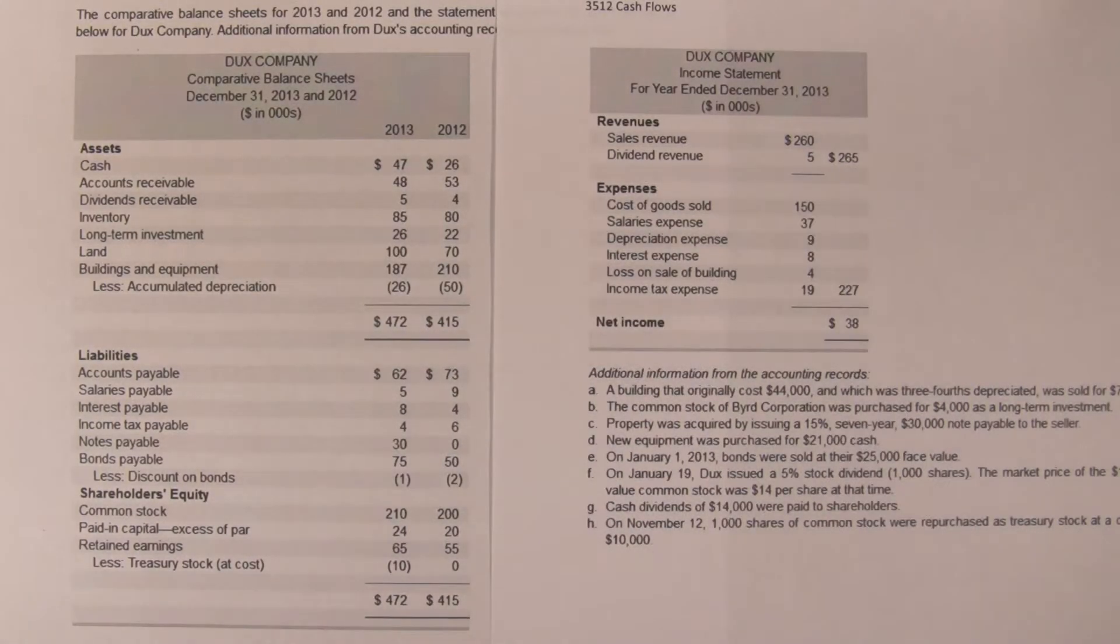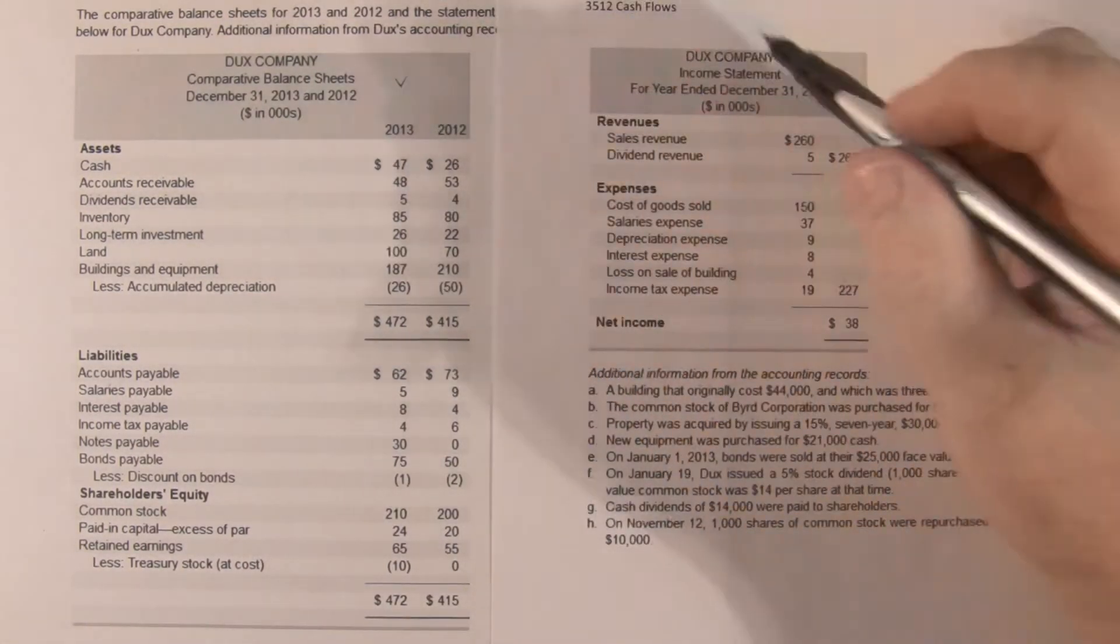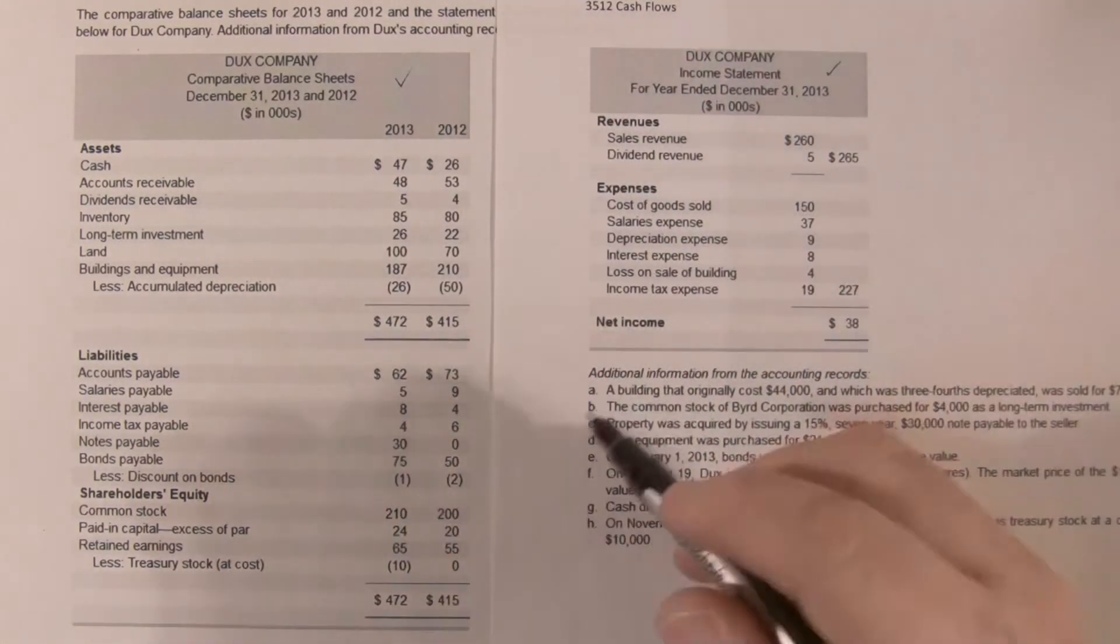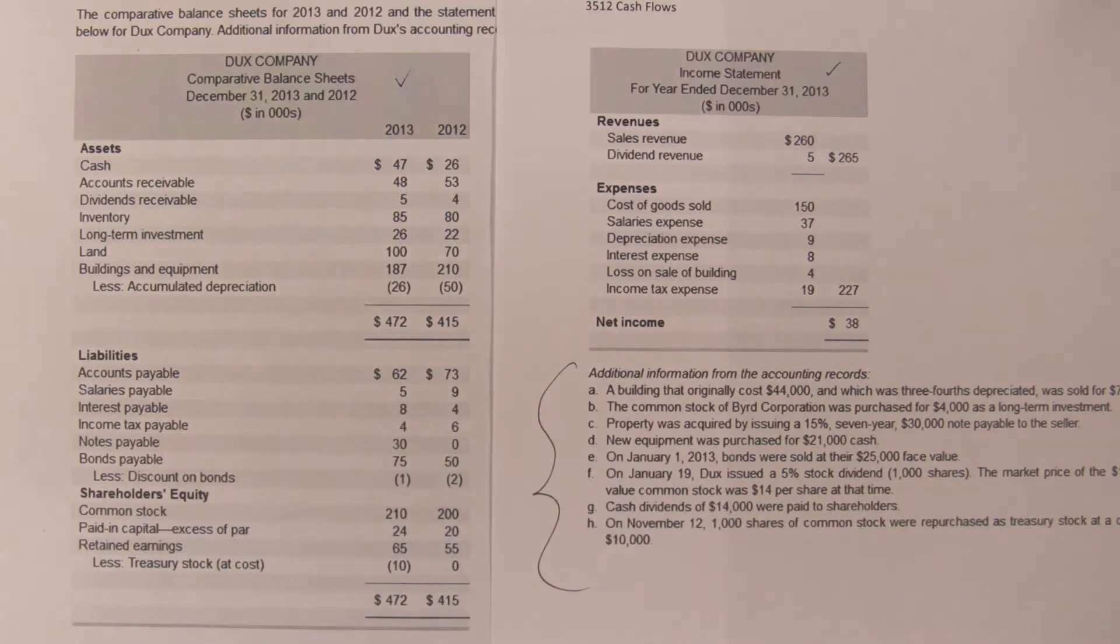Let's take a look at this. This is another comprehensive statement of cash flows. They've given us the comparative balance sheet, the income statement, some supplementary information, and they ask us to prepare a statement of cash flows using the direct method for the operating section. So let's begin.